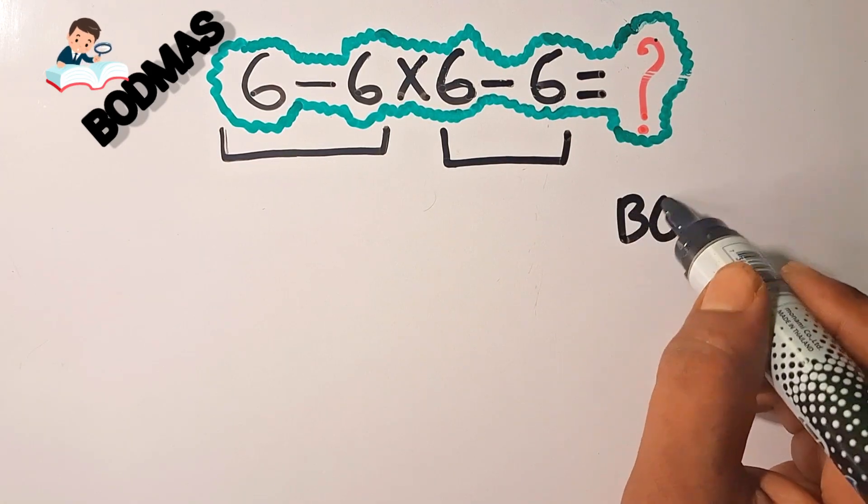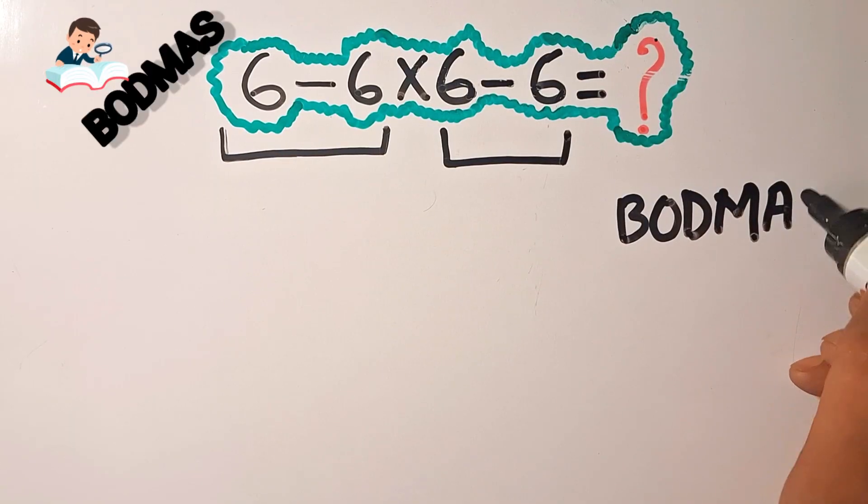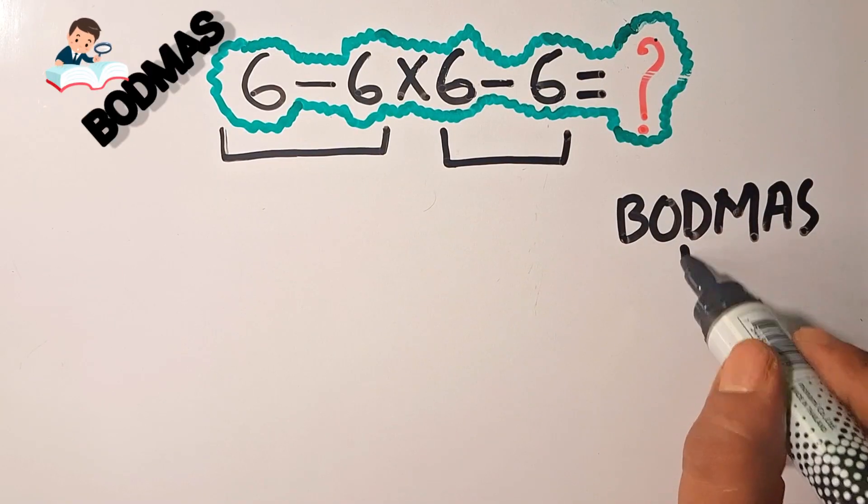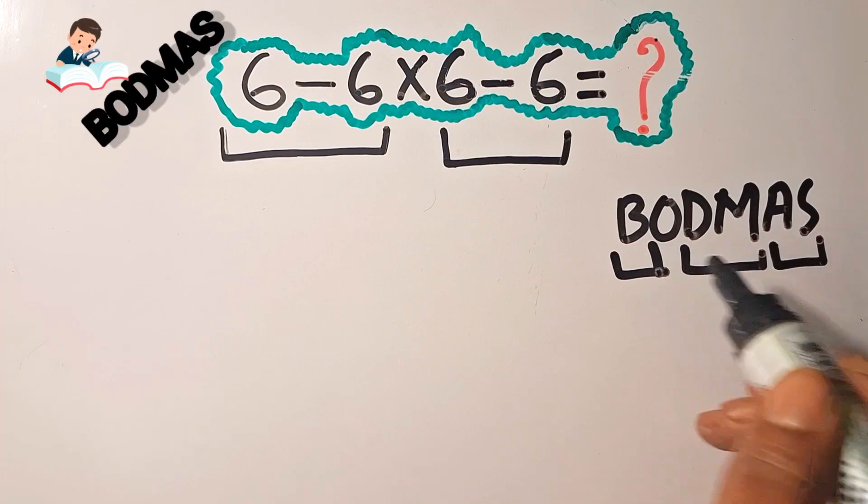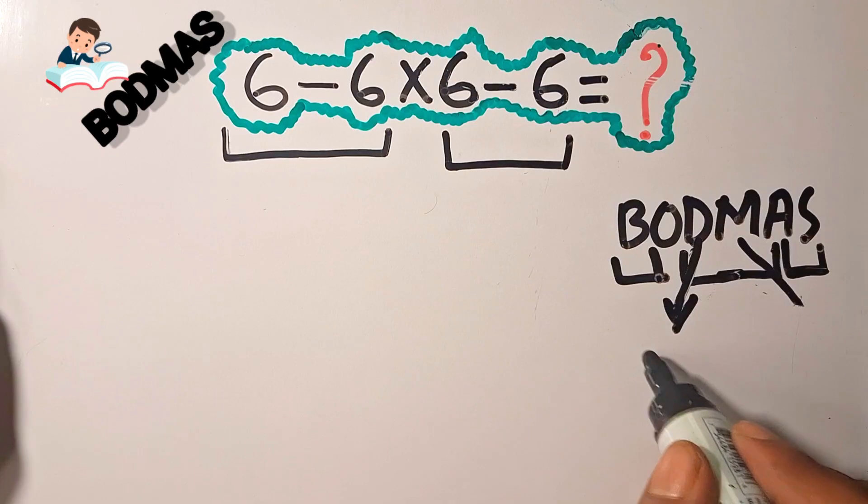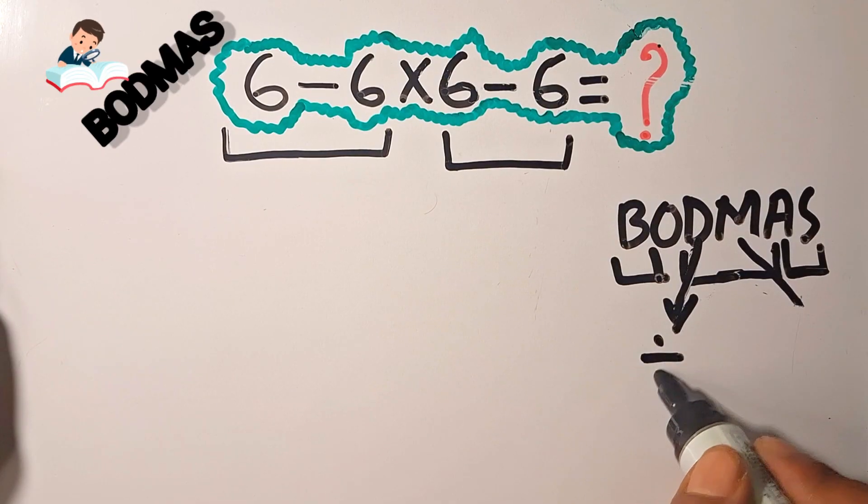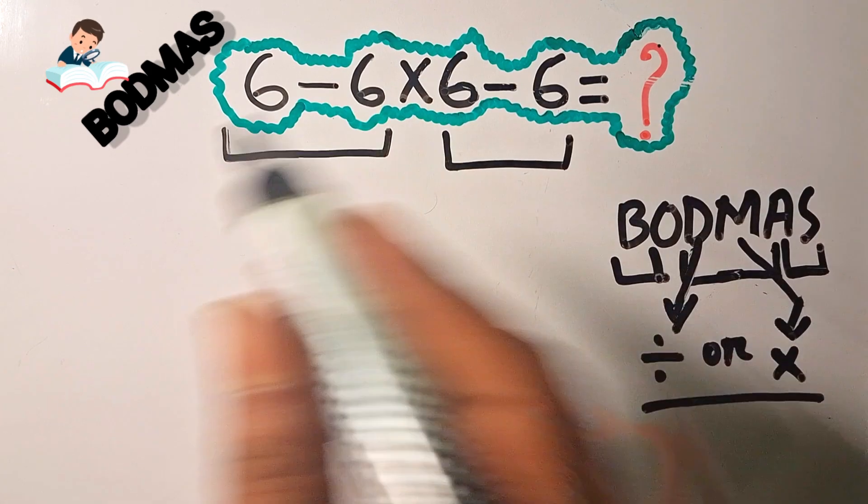We didn't follow the BODMAS rule. Here is the BODMAS rule: first you have to do bracket, of, division, multiplication, addition, and subtraction. Division and multiplication are side by side, and addition and subtraction are also side by side—you can do either addition or subtraction first.